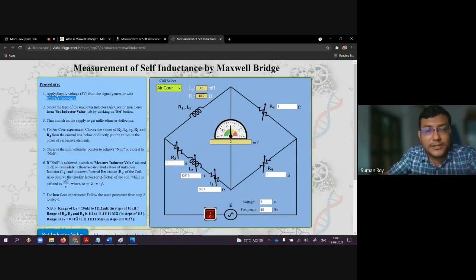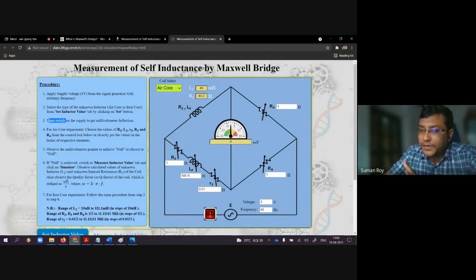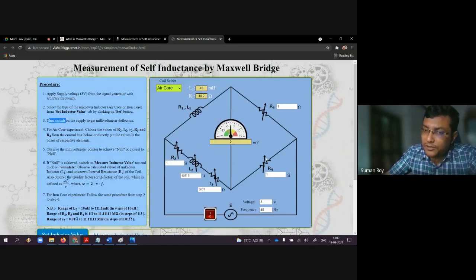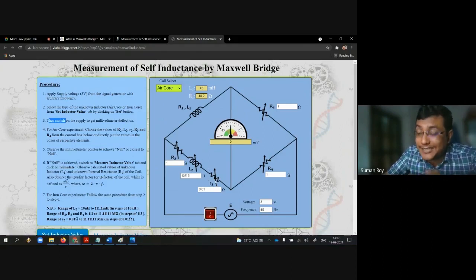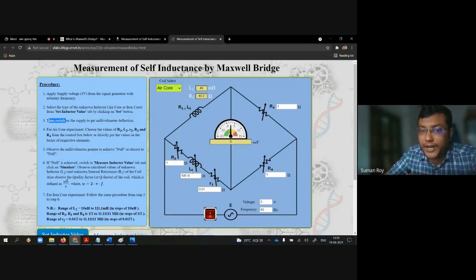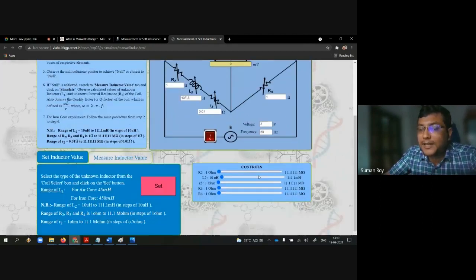Now the thing is very easy. You can see everything is variable here: R3 is a variable resistance, R4 is also a variable resistance, R2 is also a variable resistance. This small r2 is the internal resistance of this coil. L2 is a variable inductance. We can change all these parameters R2, L2, small r2, R3 and R4 by using the slide switches.